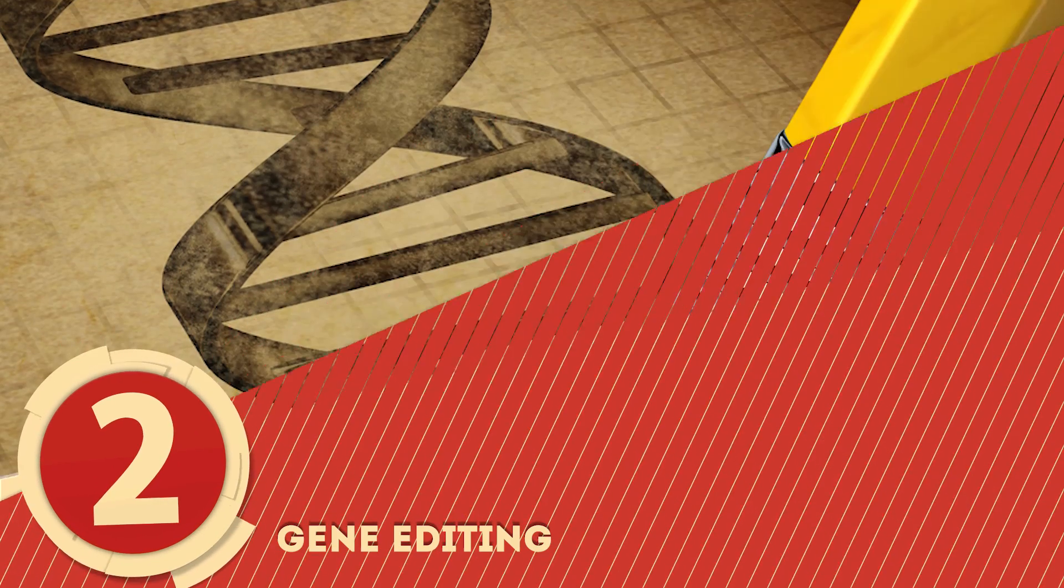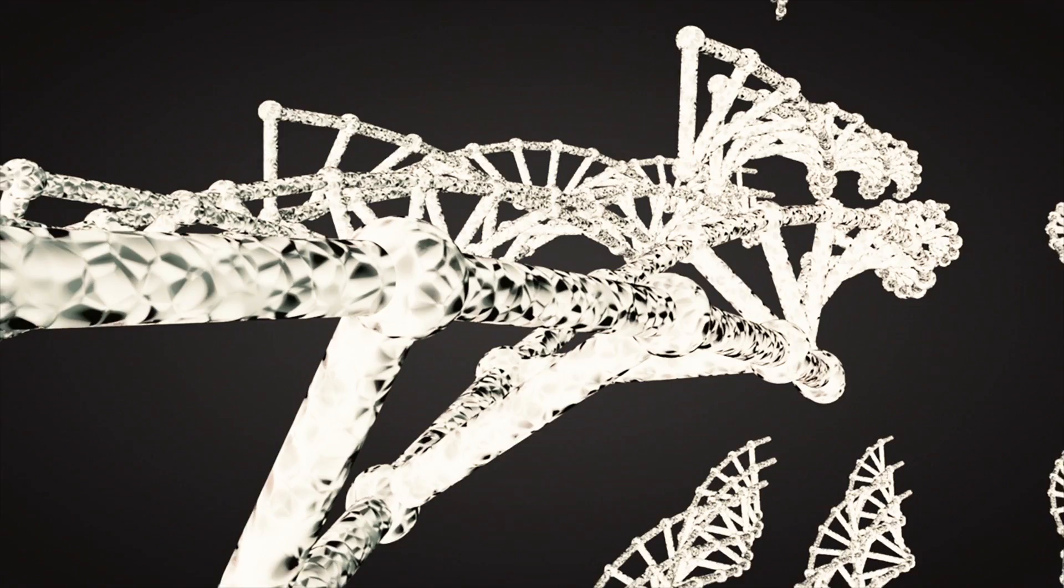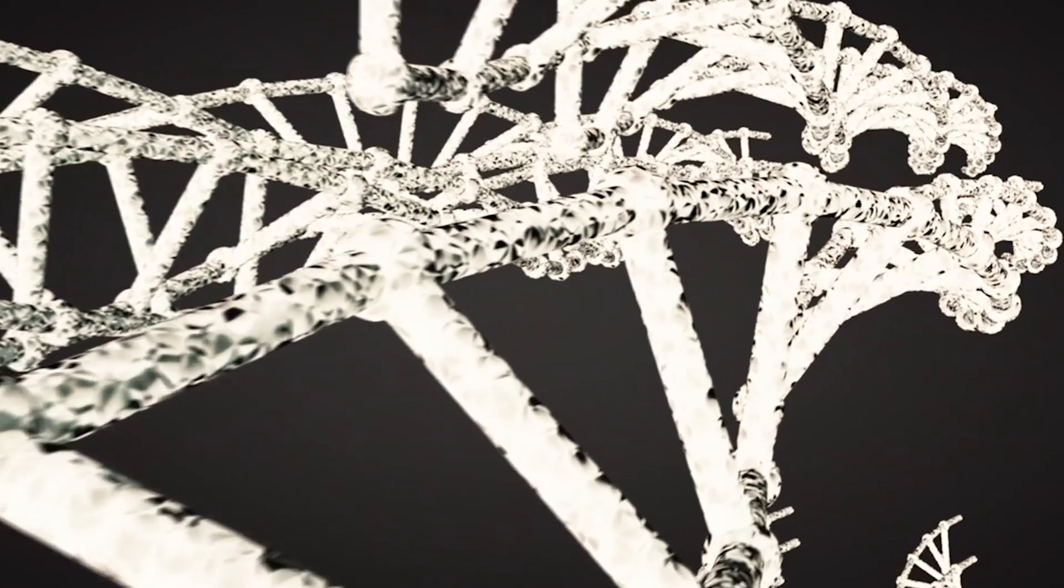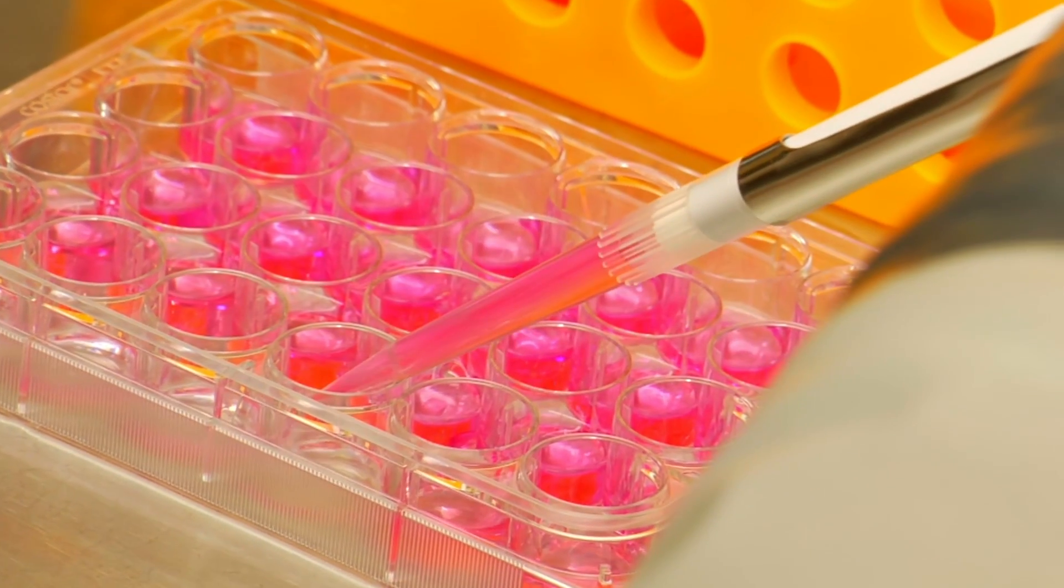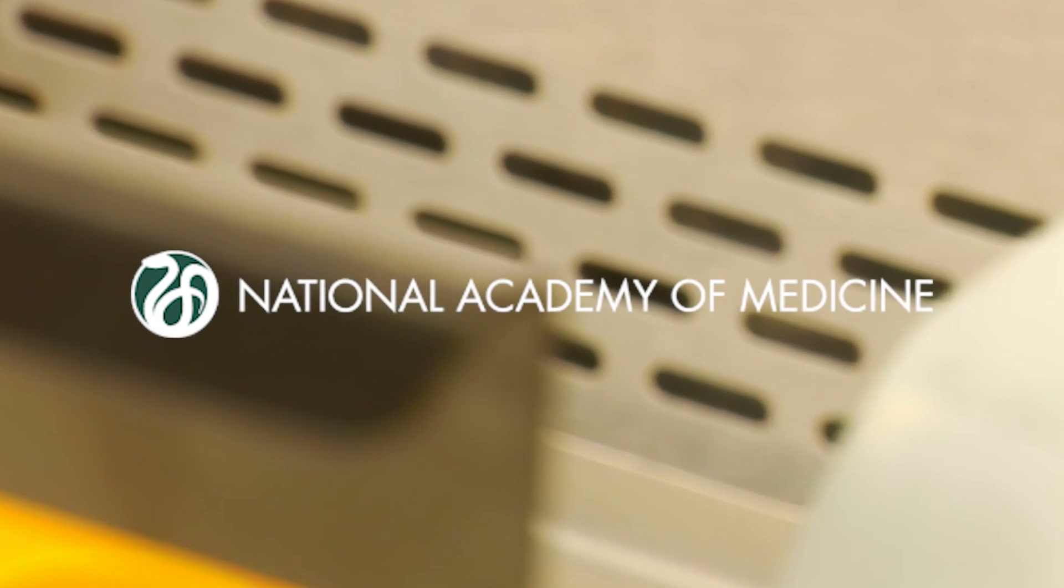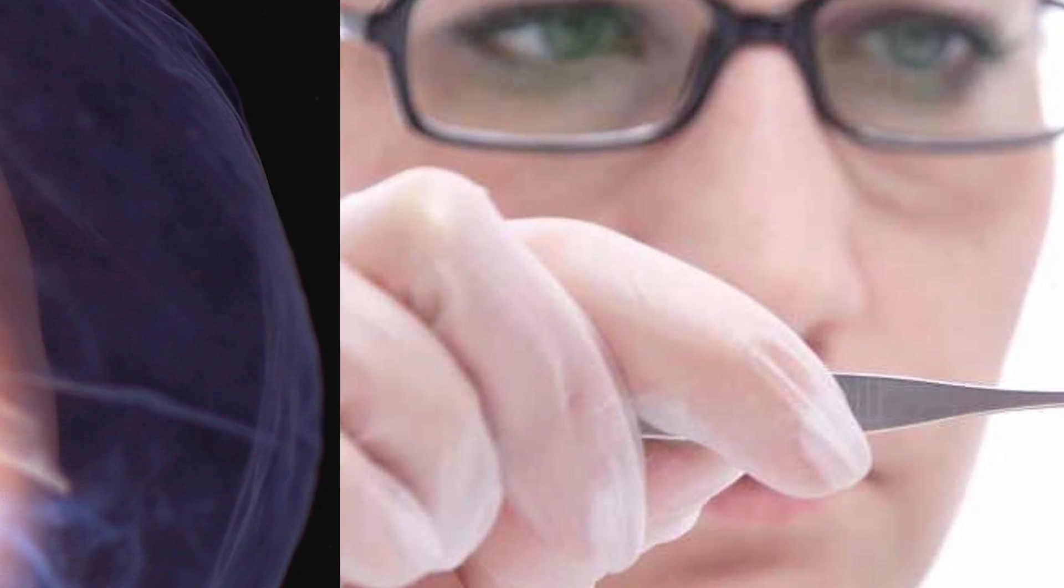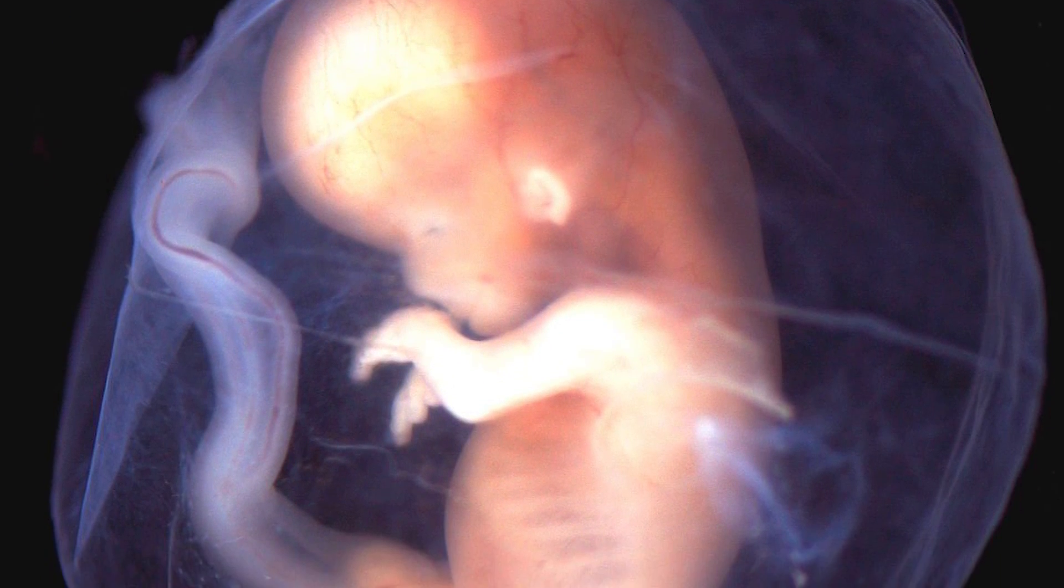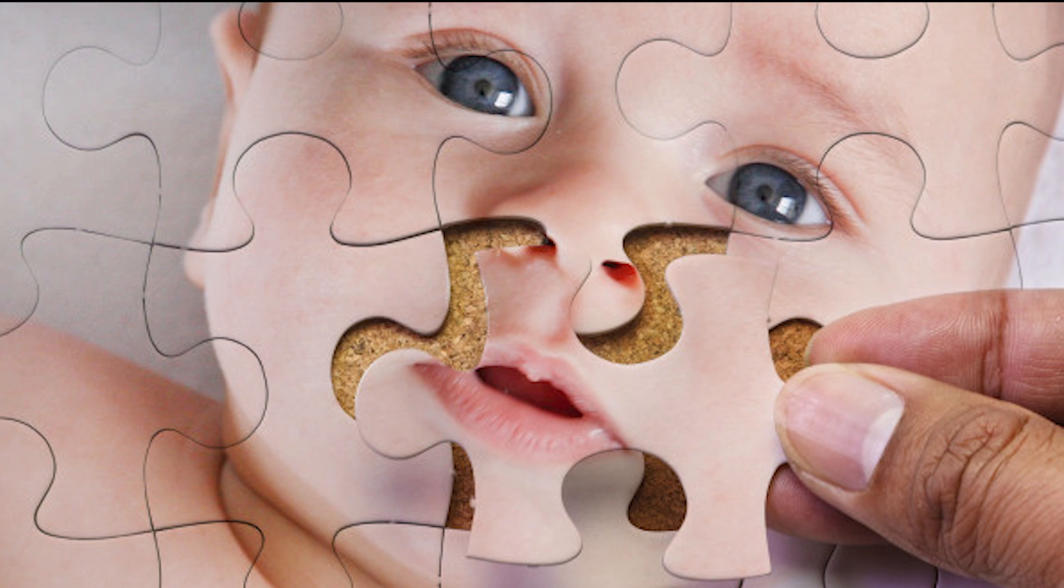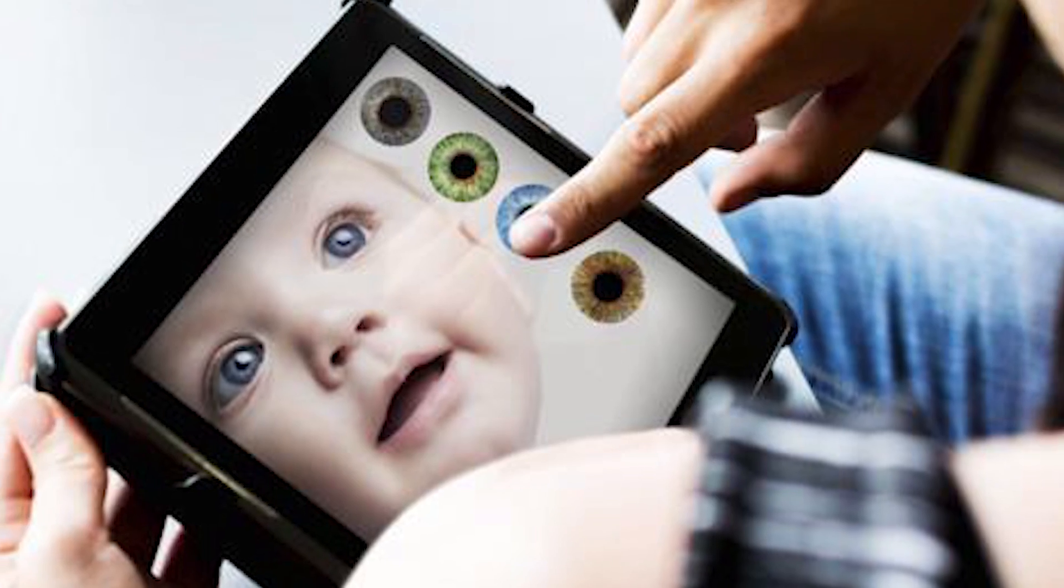2. Gene Editing. Want to have a baby, but don't want it to have your boring brown eyes? In the future, thanks to gene editing, you may be able to fix that issue before it leaves the womb. Okay, maybe that's not quite what the scientists at the National Academy of Sciences and the National Academy of Medicine are thinking of when they break new ground in gene editing. The ability to edit the DNA of an embryo could lead to the prevention of crippling diseases or disabilities, but we all know that designer babies will become the next big thing once gene editing goes mainstream.